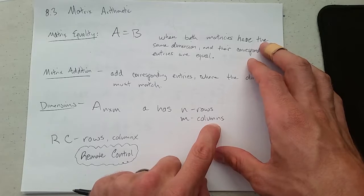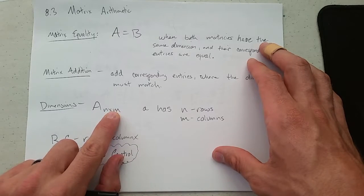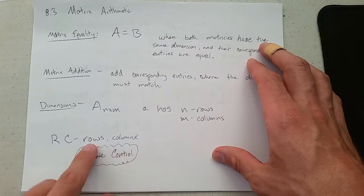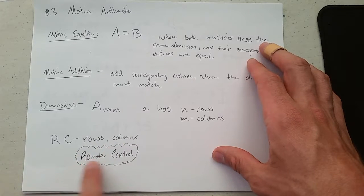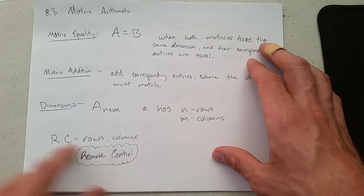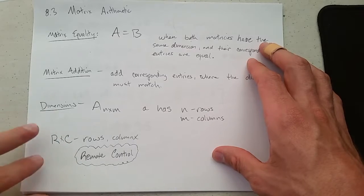How do you remember which one's rows, which one's columns? The first one's rows, second one's columns. Just remember remote control, RC. So rows first, column second, RC, rows, columns. That's how you can remember which one's first.